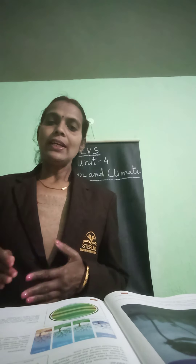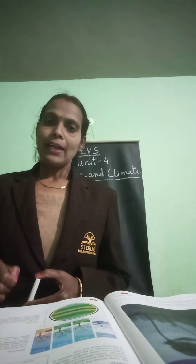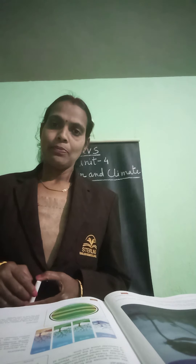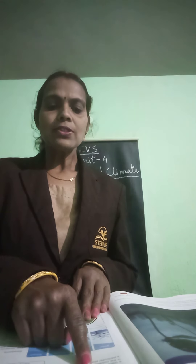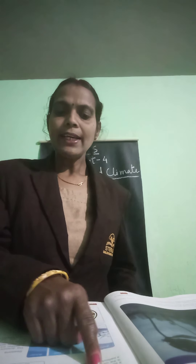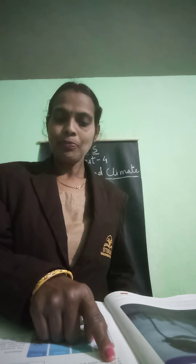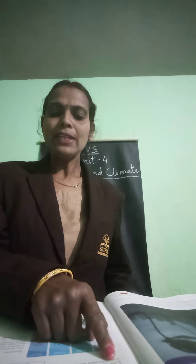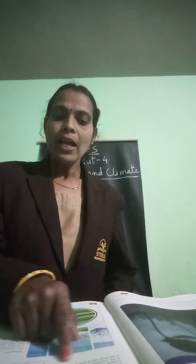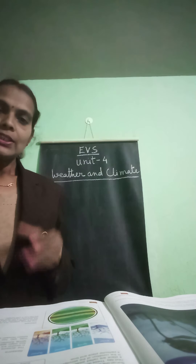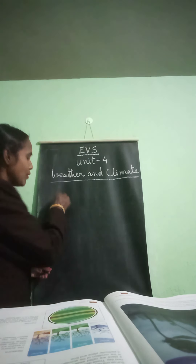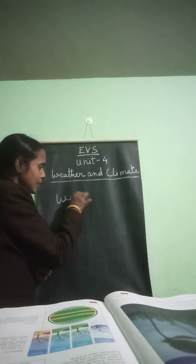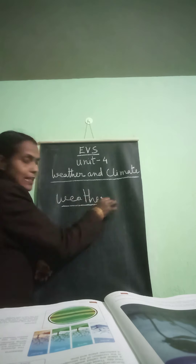So, what is weather? Weather is the condition of the atmosphere at a particular place and time. We come across the brightly shining sun on one day and it starts raining the next day. These different conditions at a place are called weather. Weather changes very fast.